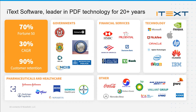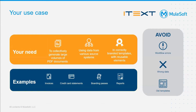iText is a leader in PDF technology, with iText Deto being a data-driven and template-based collaborative PDF generator. These are some of iText's biggest clients across various industries — a diverse customer portfolio ranging from healthcare and pharmaceutical companies, government agencies, financial services, technology companies, and more. We also have an active developer community with whom we interact often and receive feedback to further enhance and develop our technology. iText Deto is primarily for users that need to collectively generate larger volumes of PDF documents using data from various source systems into correctly branded templates. You can think of invoices, credit card statements, and boarding passes as examples.